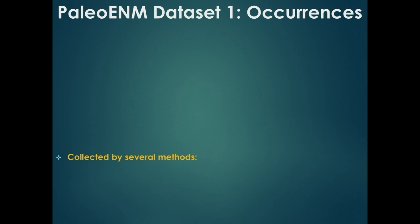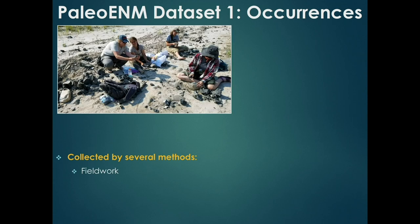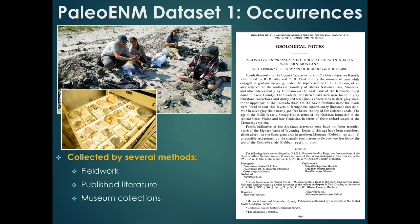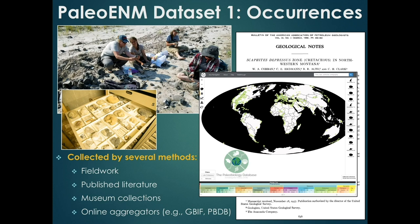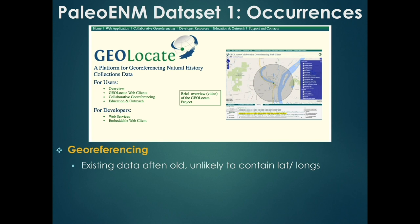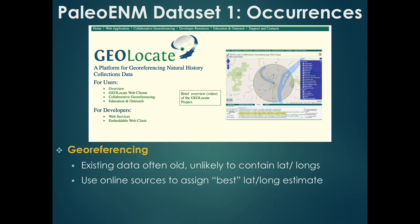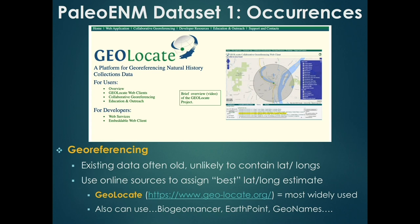A lot of existing fossil data is old and may not contain precise latitude and longitude coordinates, so we need to georeference these occurrences — estimating latitude and longitude based on old information. We use online sources to do this, and the one everybody likes right now is a site called GEOLocate. Just as an example, this plot shows the latitude of Charlotte, North Carolina through the last 320 million years. Charlotte has modified its latitude by about 50 degrees. So if you collected a fossil 320 million years old from Charlotte, you need to take into account that the plates have moved.